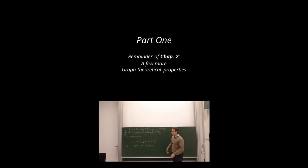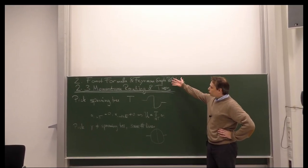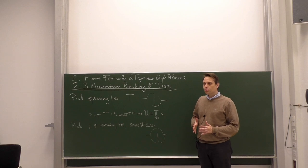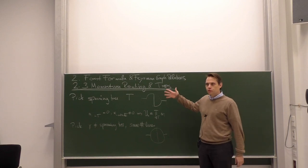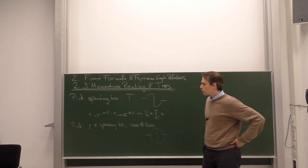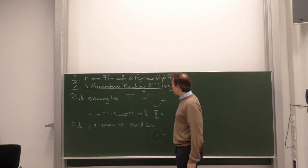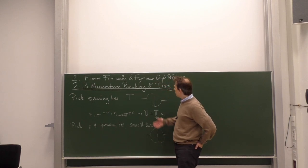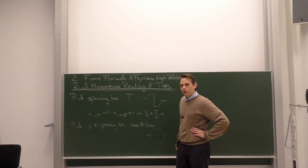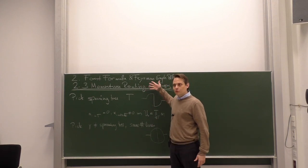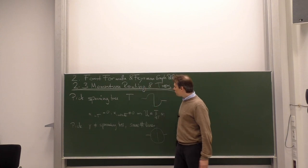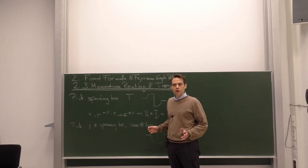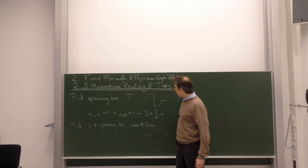Let us continue with our lecture. We are currently in Chapter 2, Forest Formula and Feynman Graph Relations, where we do not compute integrals, but look at structural and graph theoretical relations important for our later discussions. At the moment, we are in Section 2.3 on momentum routing and trees, and in particular spanning trees. What we actually do here is determine the value of the Symanzik polynomial, which is relevant for the UV divergencies.